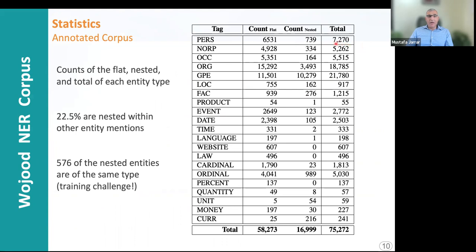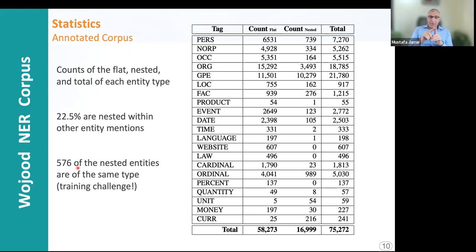We have 7,000 mentions of persons, about 700 of which are nested and the rest are flat. Groups of people total 5,000. The highest numbers are geopolitical locations, organizations, persons, NOR, and ordinals. The lowest are products, quantity units, and money and currency. Twenty-two percent of the entities in the corpus are nested. We also faced 576 cases of nested entities of the same type, such as an organization inside another organization — like 'employees union at Cairo University' — which were challenging to annotate and train a model for.